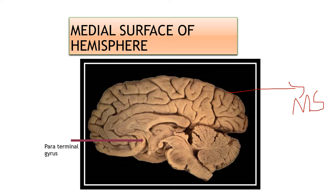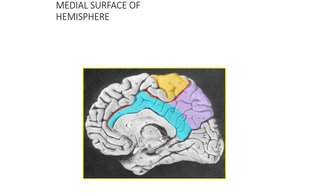Just in front of the lamina terminalis — this is the lamina terminalis — we have the paraterminal gyrus. That is a small gyrus present in front of the lamina terminalis. The lamina terminalis represents the cranial end of the neural tube.